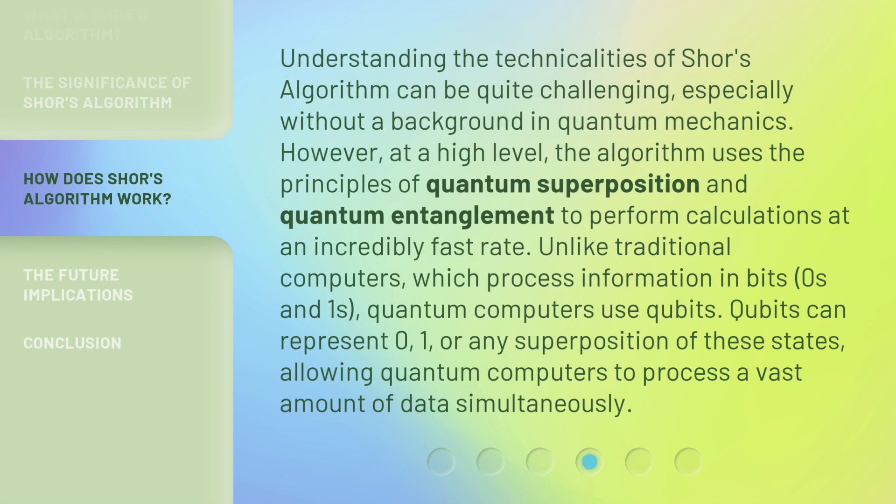Understanding the technicalities of Shor's Algorithm can be quite challenging, especially without a background in quantum mechanics. However, at a high level, the algorithm uses the principles of quantum superposition and quantum entanglement to perform calculations at an incredibly fast rate. Unlike traditional computers, which process information in bits — zeros and ones — quantum computers use qubits. Qubits can represent zero, one, or any superposition of these states, allowing quantum computers to process a vast amount of data simultaneously.